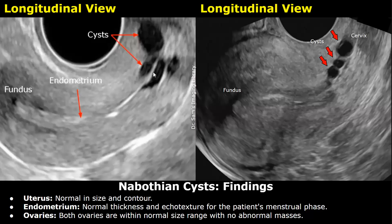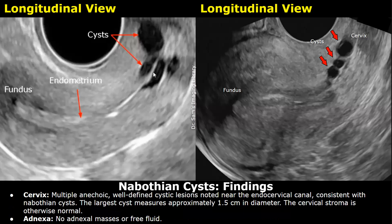Both ovaries are within normal size range with no abnormal masses. In the cervix, multiple anechoic well-defined cystic lesions are noted near the endocervical canal, consistent with nabothian cysts. The largest cyst measures approximately 1.5 centimeters in diameter. The cervical stroma is otherwise normal. No adnexal masses or free fluid noted.